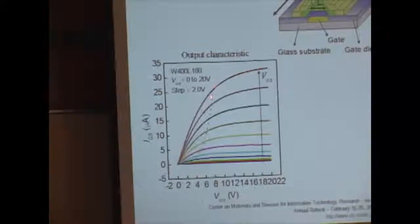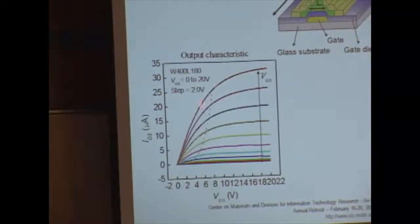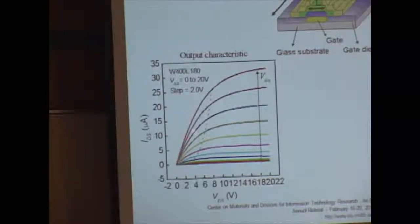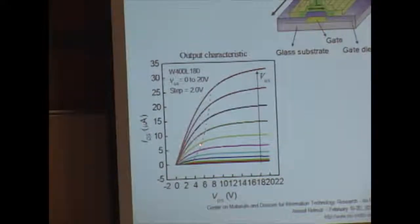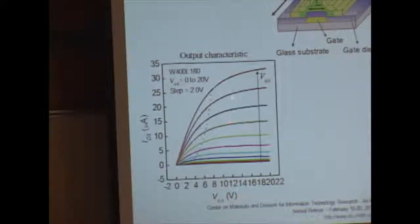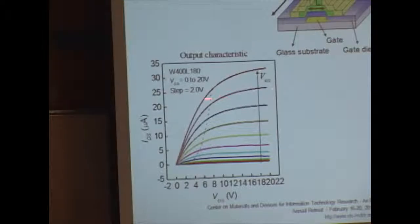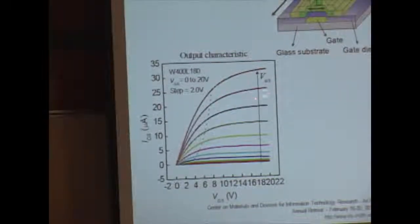There are two regimes of operation you should be aware of: first, a regime where the current varies linearly with drain-source voltage — that is called the linear regime. And there is a regime where the current doesn't vary much and is said to be saturated.